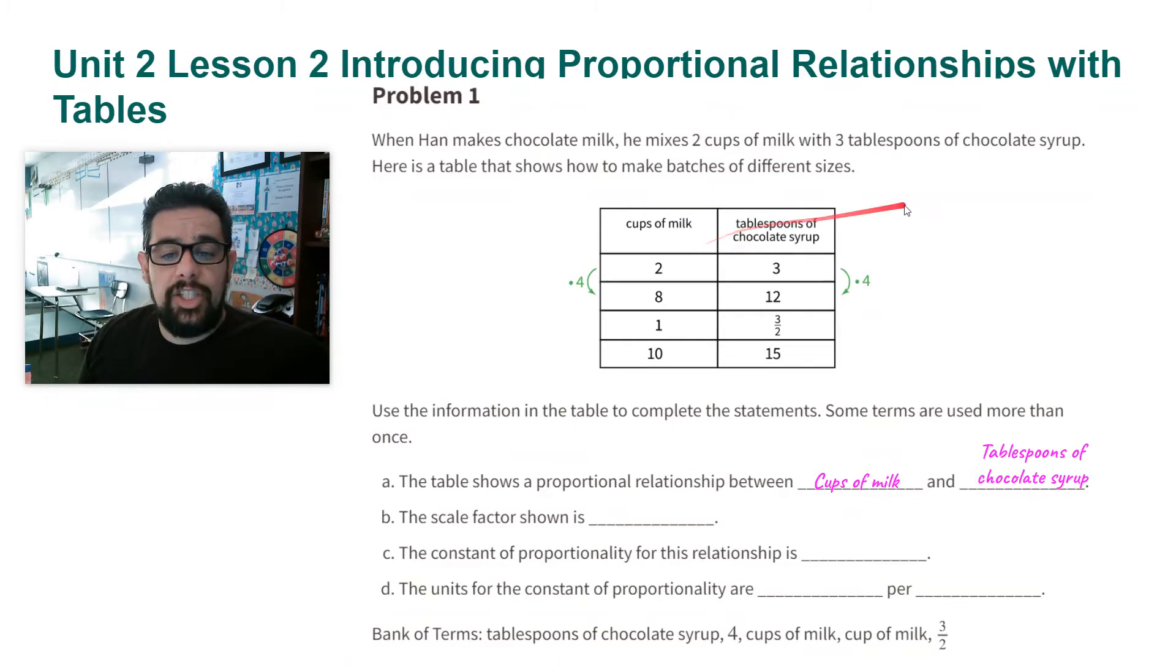Part B, the scale factor shown is, and here is our scale factor, it is four. Notice here how you're multiplying both the cups of milk and tablespoons of chocolate syrup by four. That is the scale factor.